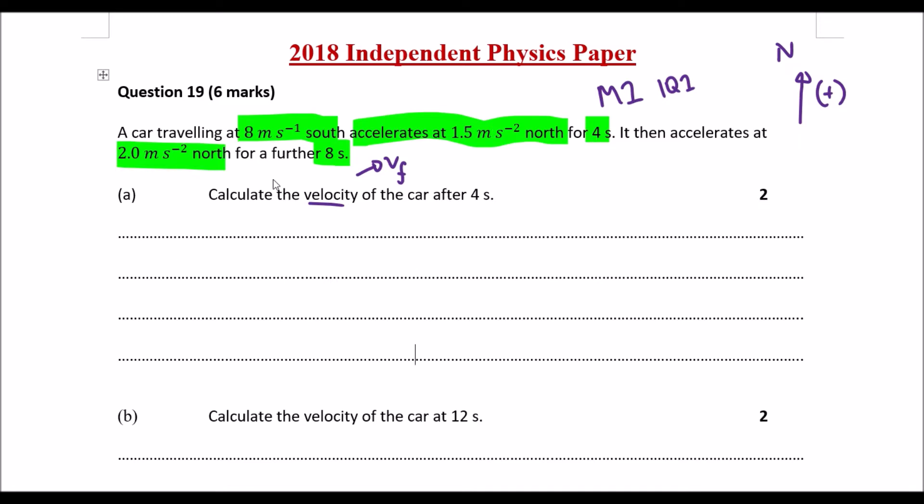If I have a look at the values that are given to me, the most appropriate one would be v final equals to u, our initial velocity, plus at, acceleration and time. We know that the initial velocity is going to be negative 8 meters per second, negative because it's going south. We have an acceleration of 1.5, that's going to be positive because that's going north, and we went for 4 seconds.